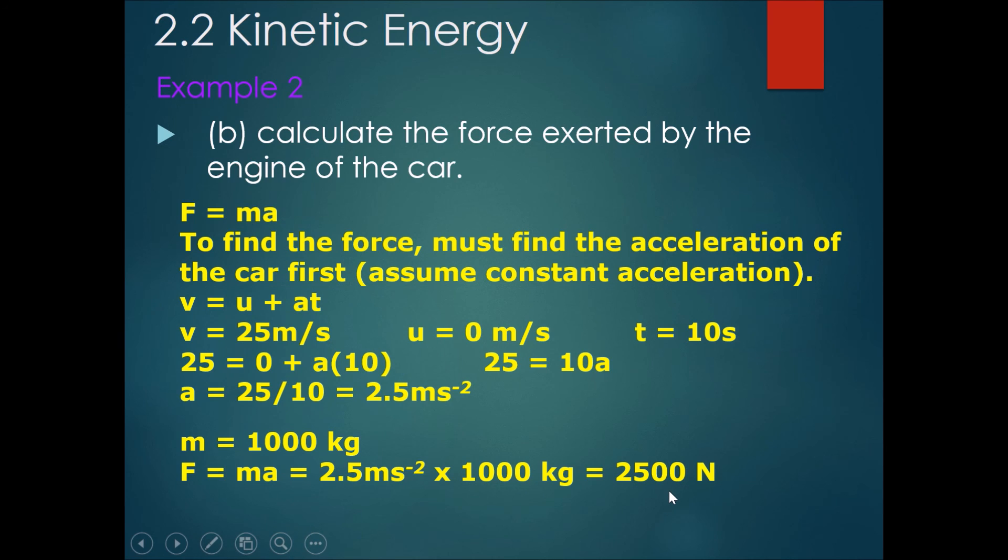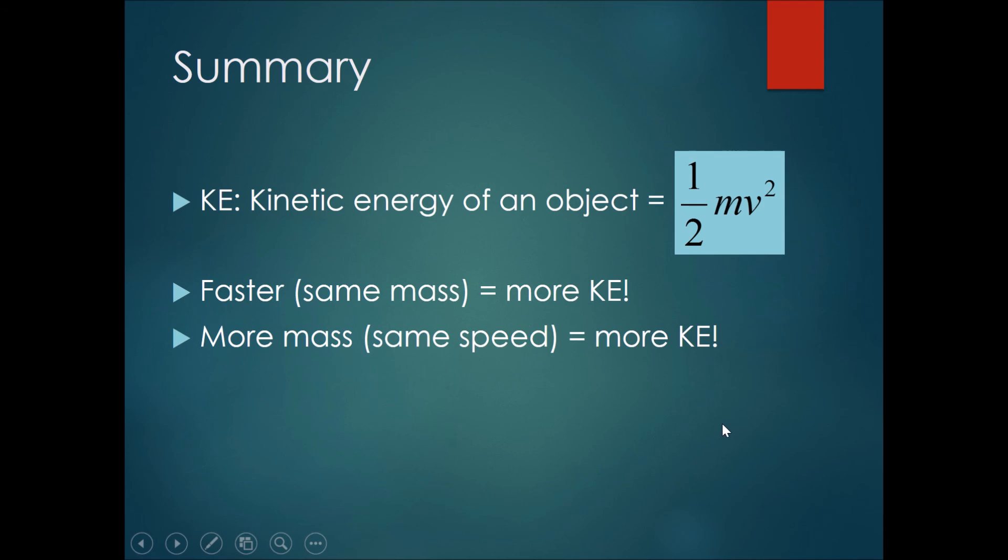So in summary, KE equals half mv squared. Faster with the same mass, it will have more KE. More mass with the same speed, it would also have more KE.